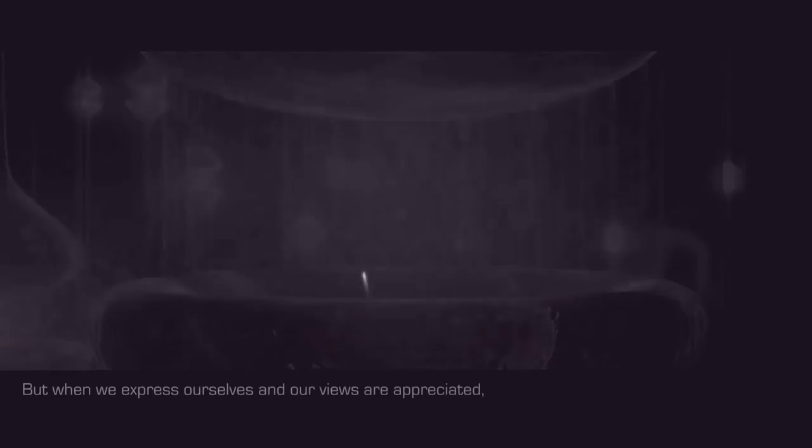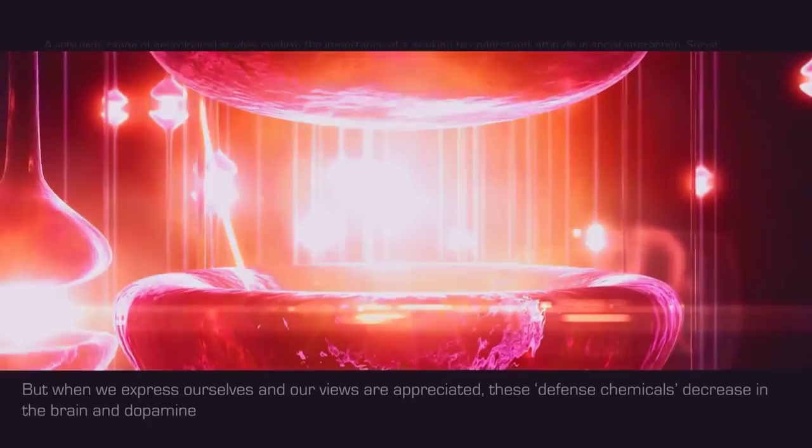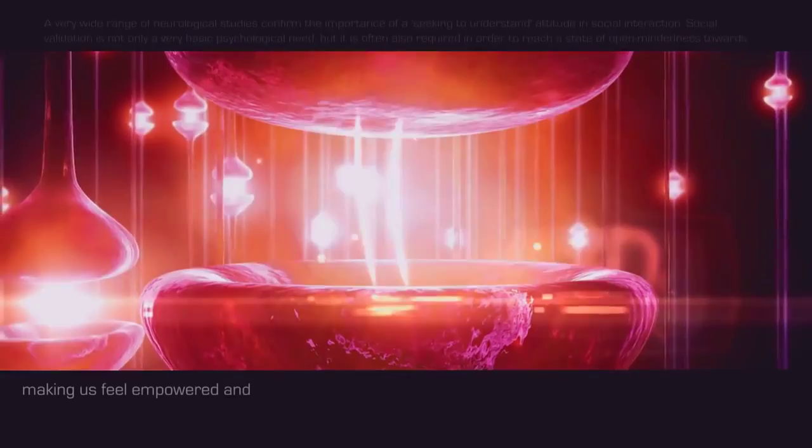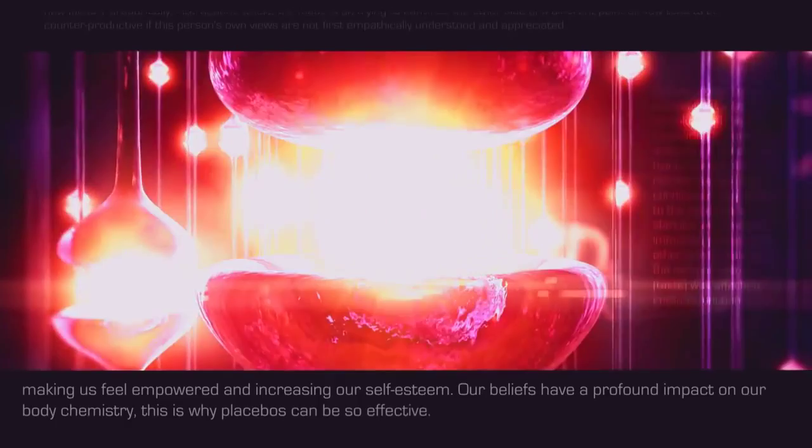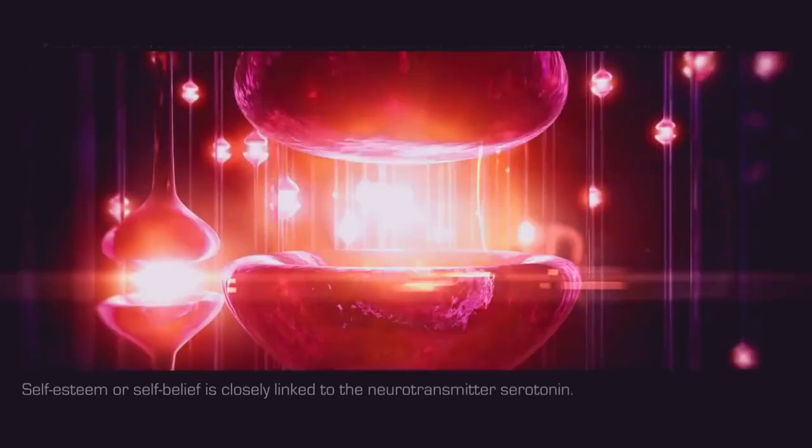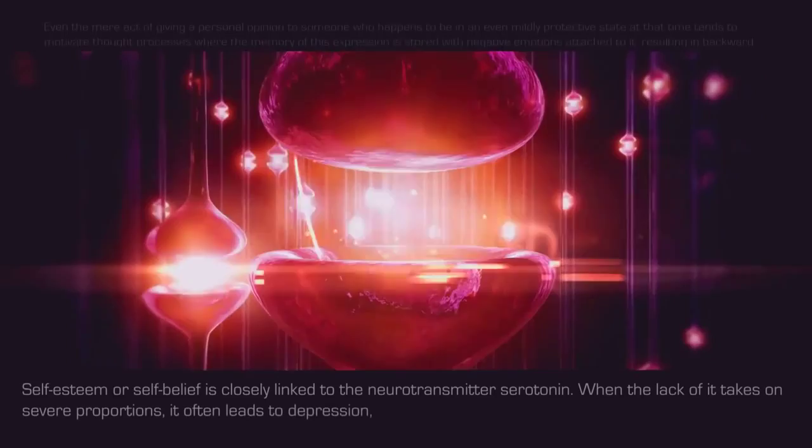But when we express ourselves and our views are appreciated, these defense chemicals decrease in the brain and dopamine neurotransmission activates the reward neurons, making us feel empowered and increasing our self-esteem. Our beliefs have a profound impact on our body chemistry. This is why placebos can be so effective. Self-esteem or self-belief is closely linked to the neurotransmitter serotonin. When the lack of it takes on severe proportions, it often leads to depression, self-destructive behavior or even suicide.